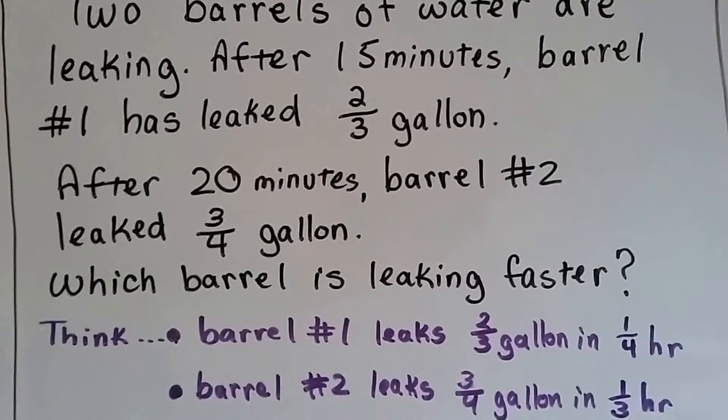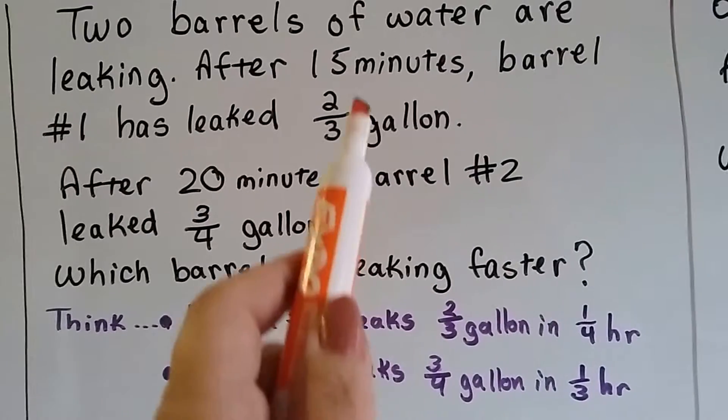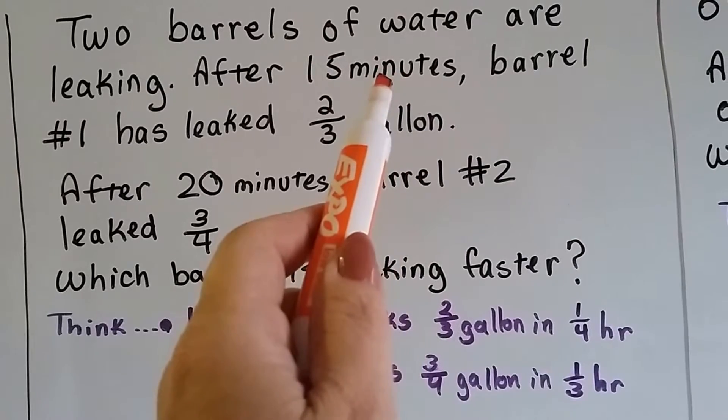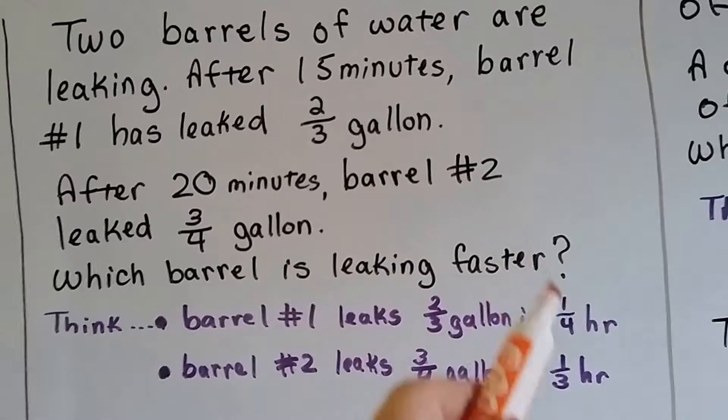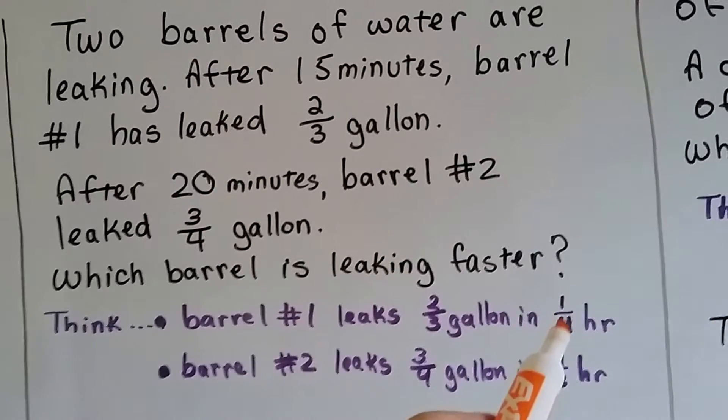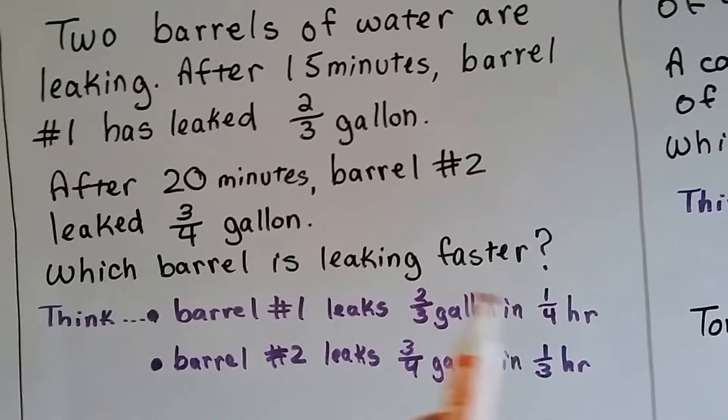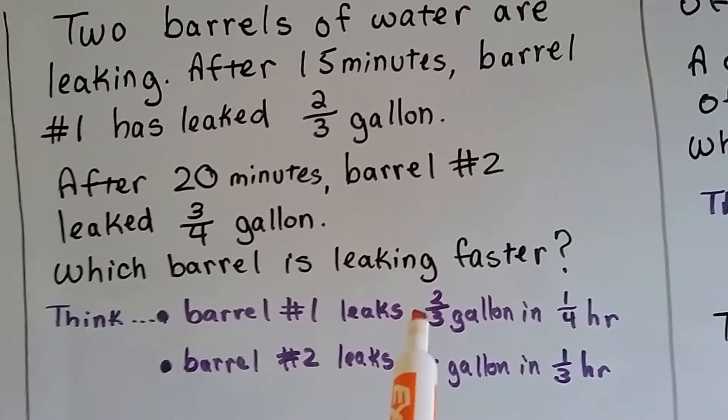So which barrel is leaking faster? So we think, barrel number one leaks two-thirds of a gallon in 15 minutes. And we know there's four fifteens in a 60-minute hour. So that's one-fourth. That 15 minutes is one-fourth. So we're going to convert this to a fraction of one-fourth. So we have the same form of ratio going on here.